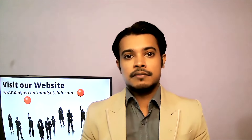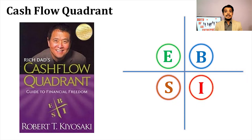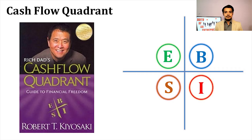Even though Rich Dad Poor Dad is the most popular book written by Robert Kiyosaki, his masterpiece is the Cash Flow Quadrant book. In this book, Robert Kiyosaki explains why poor people are becoming poorer while rich people are becoming richer, giving a scientific explanation for that scenario. He introduces a unique concept called ESBI.